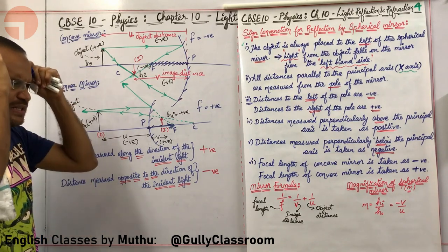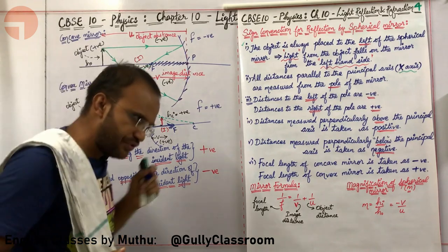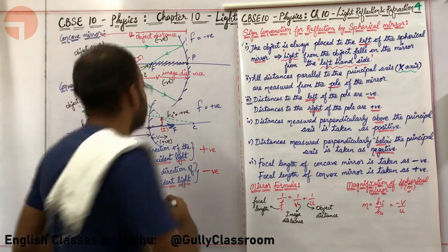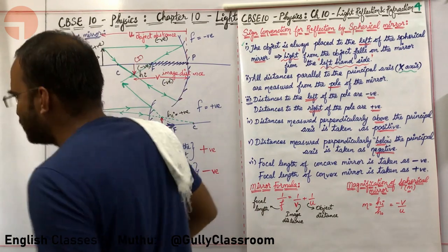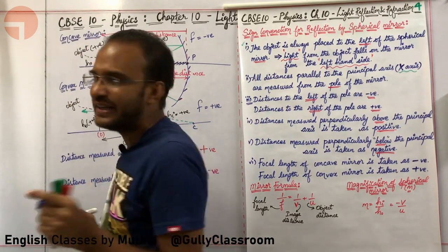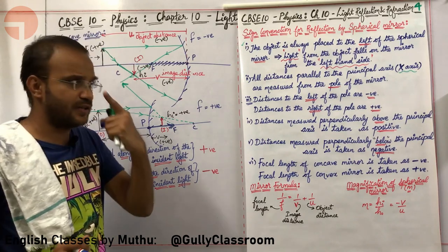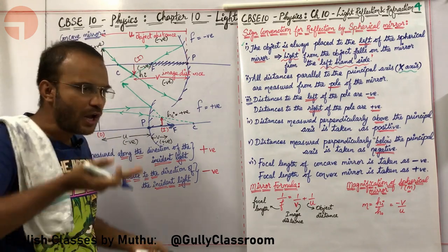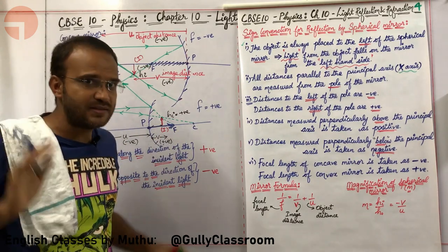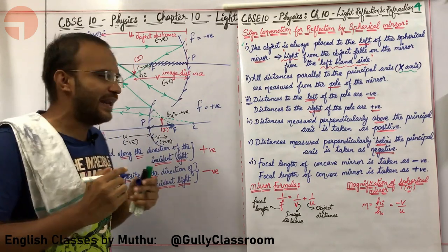The simplest way to remember horizontal distances: in the direction of the incident light — automatically positive. Opposite to the direction of the incident light — automatically negative. For vertical distances: above the principal axis, all heights are positive. Below the principal axis, all heights are negative.